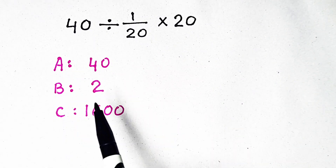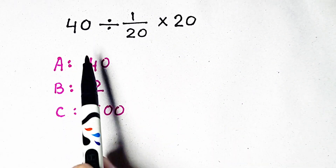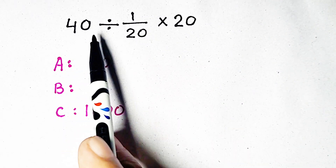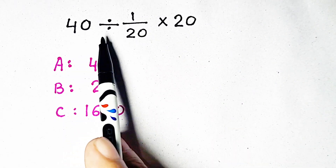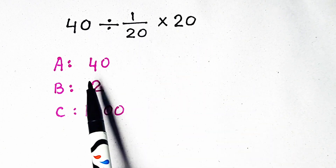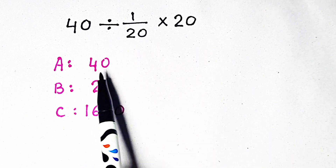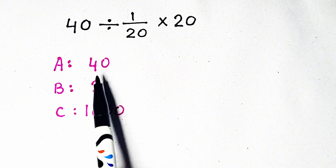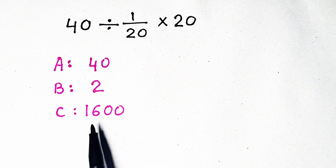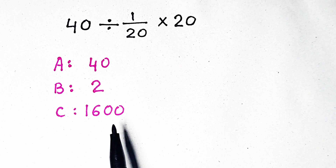Hello, I am going to start a quiz for you. Question number 1 is 40 divided by 1/20 times 20. What will be the answer? Either its answer is 40, 2, or 1600. You can calculate and give me the answer.